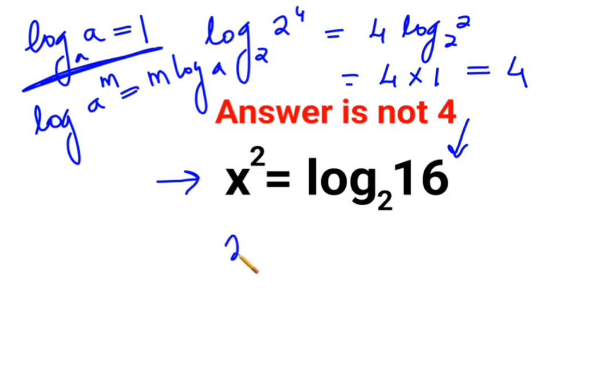So at the RHS, we will have x square equals to 4. Now in order to find the value of x, when you take square roots on both sides, we will have the answer as plus minus 2.